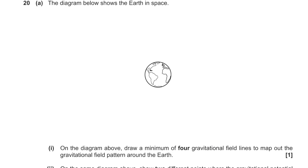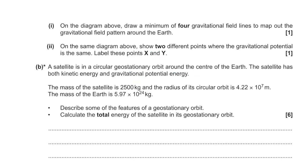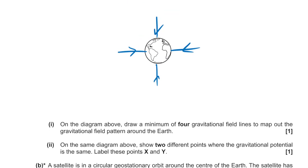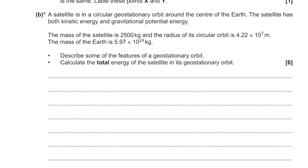Question 20: Earth in space. Draw a minimum of four gravitational field lines around the Earth — draw them radially inward. Label two points X and Y at equal distances from the Earth's surface where the gravitational potential is the same. Describe features of a geostationary orbit: time period equals 24 hours, it stays above a fixed point on the equator.